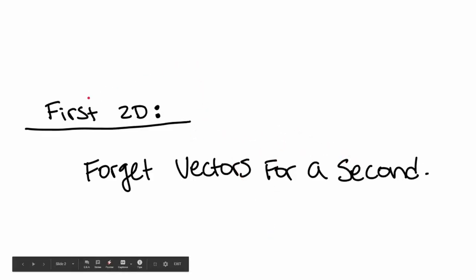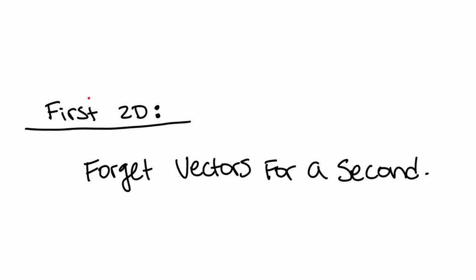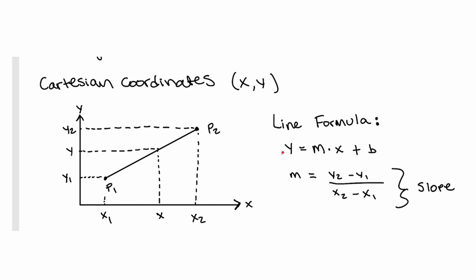Let's forget the third dimension for now — let's just talk about 2D coordinates, not vectors yet. The first thing you can do when you have an XY coordinate system, which is called a Cartesian coordinate system — we're very familiar with it; there are other ones, but we don't use those for game engines. So if you have an X and Y coordinate, you can define a point like P1, where its X coordinate is X1 and its Y coordinate is Y1.